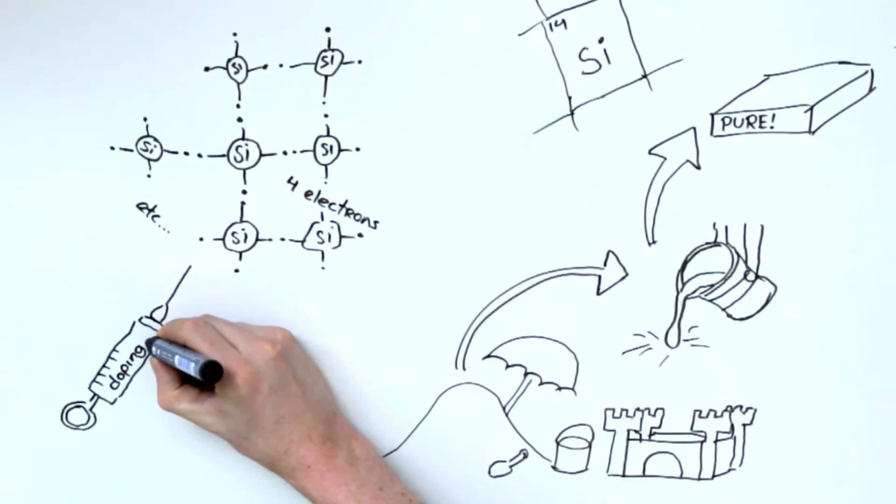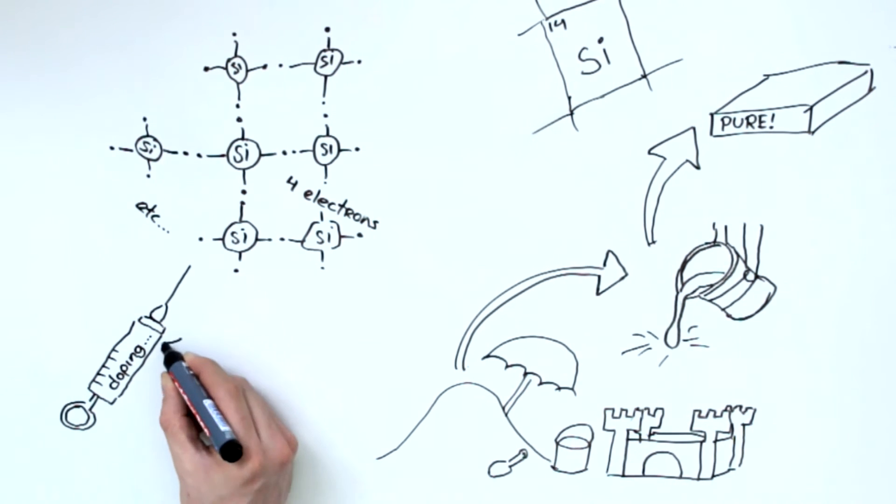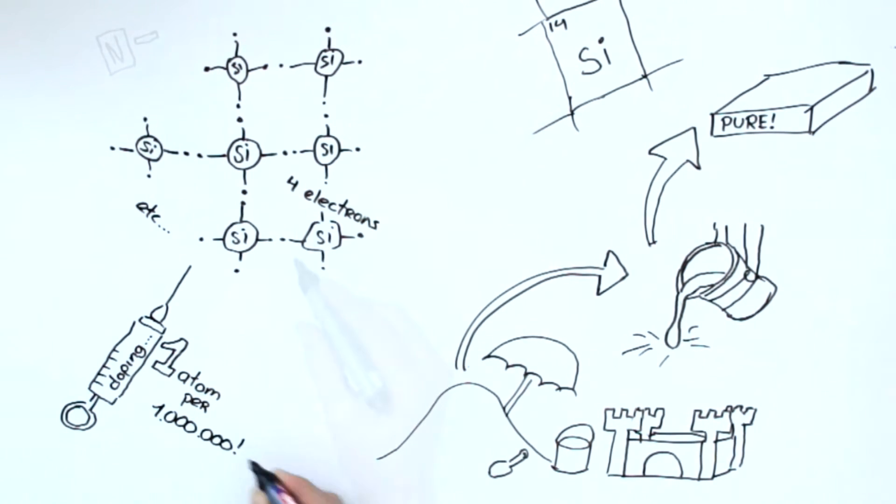This is done through a process called doping. Doping means you add small impurities to a material. For every million silicon atoms we add one other atom into the crystal structure.